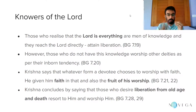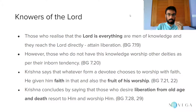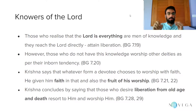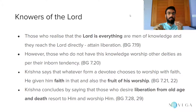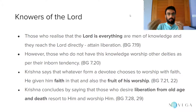The final topic from chapter 7 is Krishna's description of the Jnani. Those who realize that the Lord is everything are men of knowledge and they reach the Lord directly and attain liberation. The knowledge that the Jnani has is that the Lord is everything — everything is divine. He understands the all-pervasiveness of divinity, and that is what characterizes a Jnani.